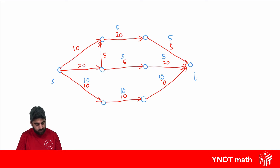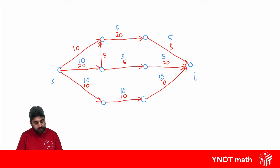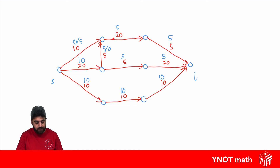Things get a bit tricky here — this pipe allows a flow of 20 leading into a 5 and a 5, so theoretically it can only push 10 in and split it 5 and 5. Now we have two pipes leading into one that only allows a flow of 5, which means from both incoming pipes we can only have a total of 5. We don't know exactly where the 5 will come from, but we know the total can only be 5 — so we could make one pipe 5 and the other 0, or any combination.